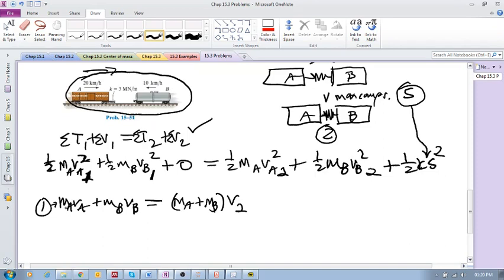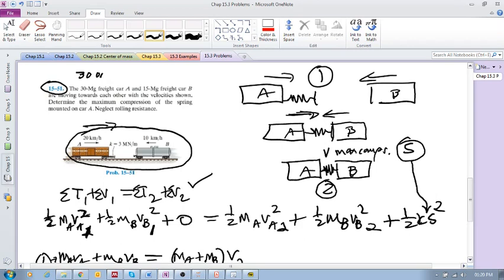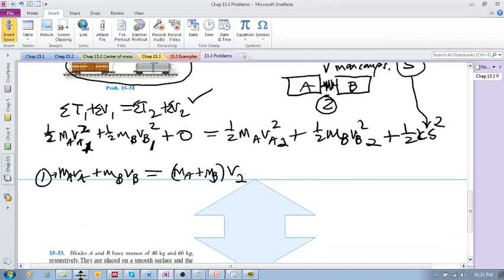Let's put this in. That's 30,000 kilograms for car A and 15,000 kilograms for car B. If you convert the 20 kilometers per hour into meters per second you'll get 5.56, and for 10 kilometers per hour you'll get 2.78 meters per second.